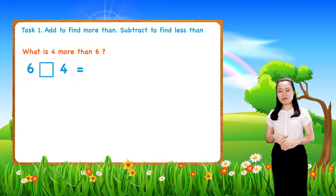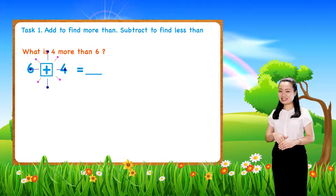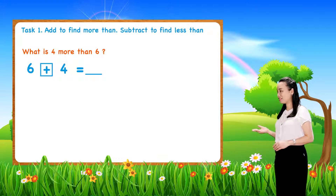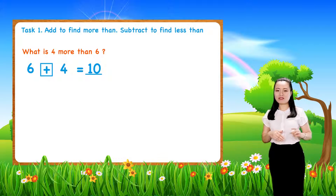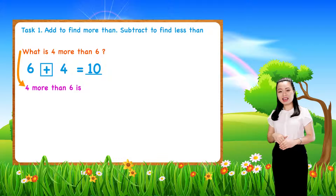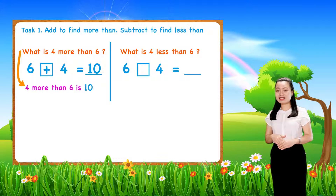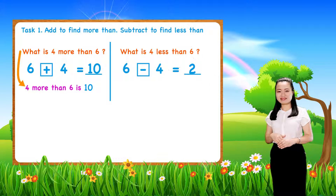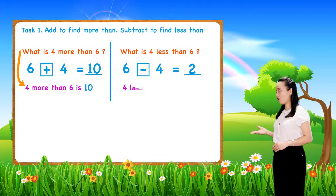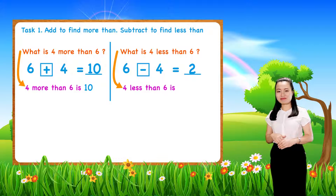Next, what is four more than six? We add six plus four equals ten. So, four more than six is ten. The last one: what is four less than six? We subtract six minus four equals two. So, four less than six is two.